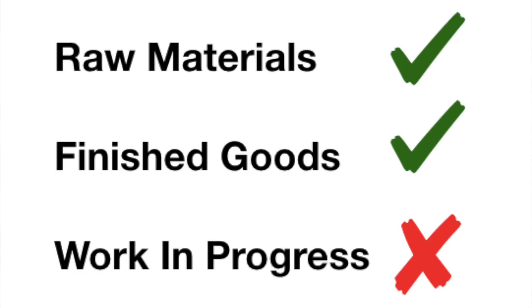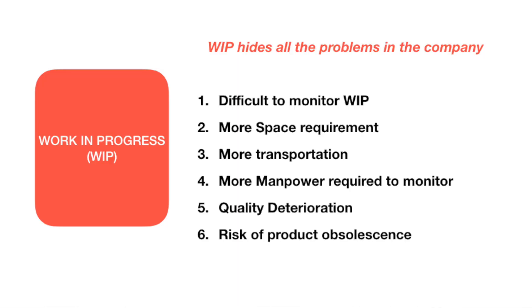So raw materials and finished goods can be stocked depending on company requirements. But work-in-progress is the biggest waste — present inside the shop floor, it creates many problems: it's very difficult to account for, takes up a lot of space, creates extra transportation, requires dedicated people just to count it, and carries a risk of obsolescence if a product changes. Establishing a single piece flow is the best way to reduce WIP.